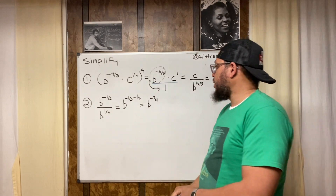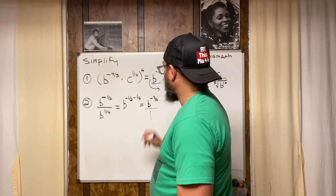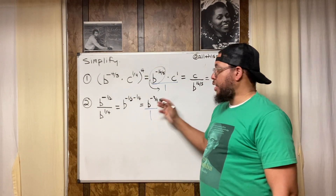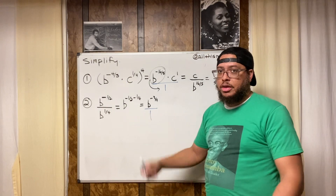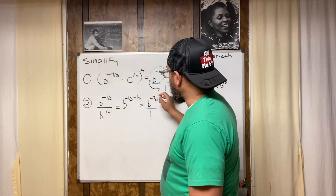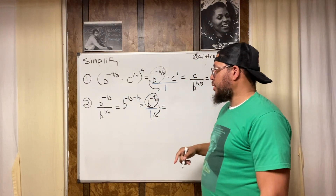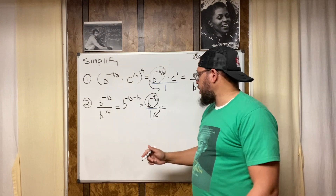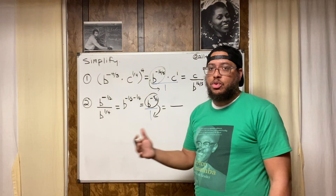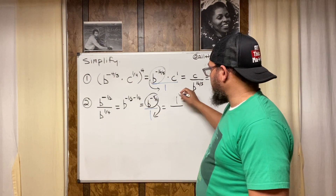We don't want negative exponents in our final answer, so we use the negative exponent rule again. Visualize this as a fraction — put a one underneath, because anything divided by one is the same thing. Now move the b downstairs. What's left up top? The coefficient of any variable is one if none is written, so that one remains on top.